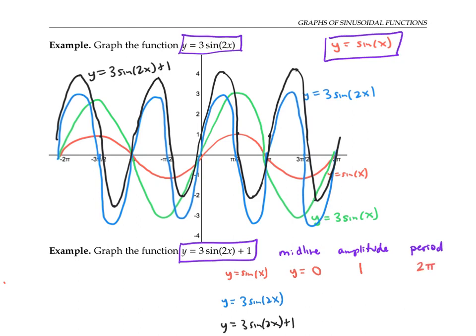For the transformed function y equals three times sine of two x, the two on the inside shrinks everything horizontally by a factor of one half. So it changes the period of two pi into a period of one half times two pi, which is pi. Since the two on the inside only affects x values and horizontal distances, it doesn't affect the midline, which is a y value, or the amplitude, which is a vertical distance.